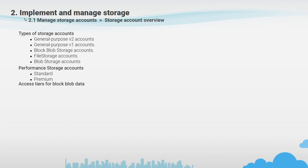Modern storage systems have different algorithms for accessing data based on usage patterns. In Azure Storage, each access tier is optimized for a particular pattern or data usage. By selecting the right access tier for your needs, you can store your block blob data in the most cost-effective way — for example, hot, cool or archive. We will return to this subject later.